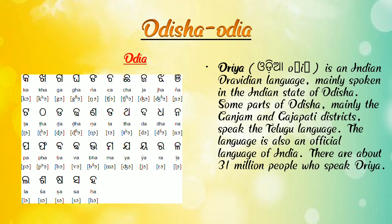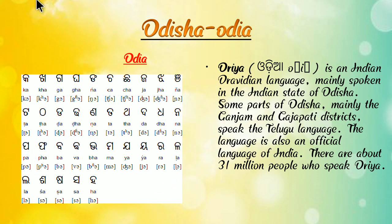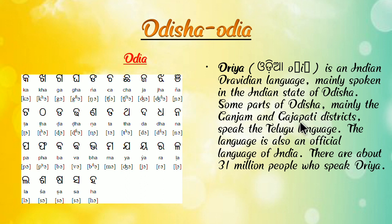Next — Odisha. Here we can see the alphabet of the Odia language. In Odisha, Odia language is spoken. Odia is an Indian Dravidian language mainly spoken in the Indian state of Odisha. Some parts of Odisha — mainly the Ganjam and Gajapati districts — also speak the Telugu language.